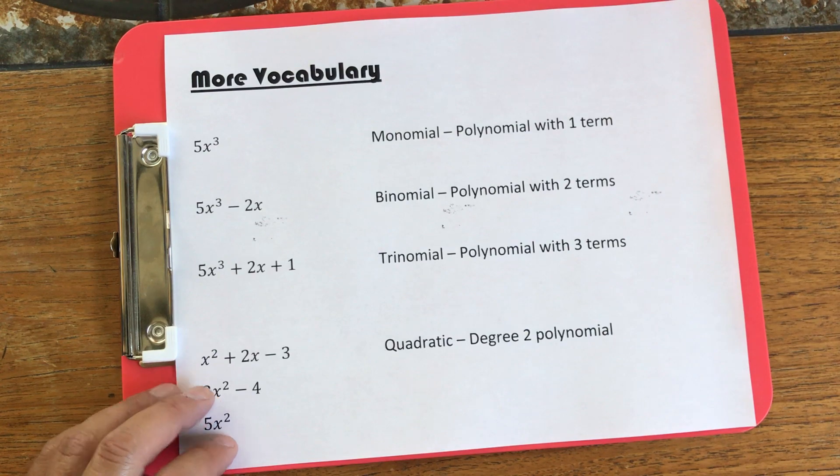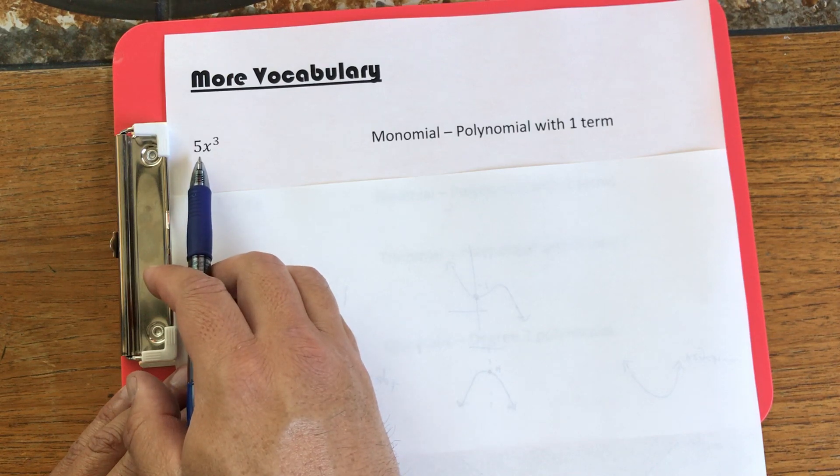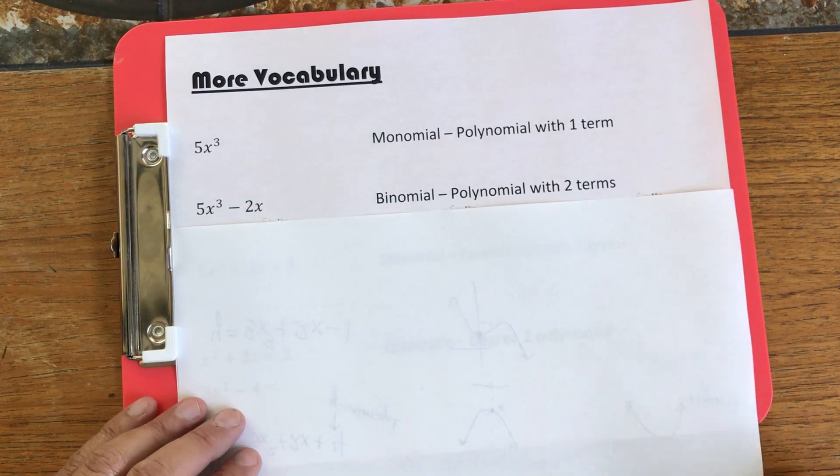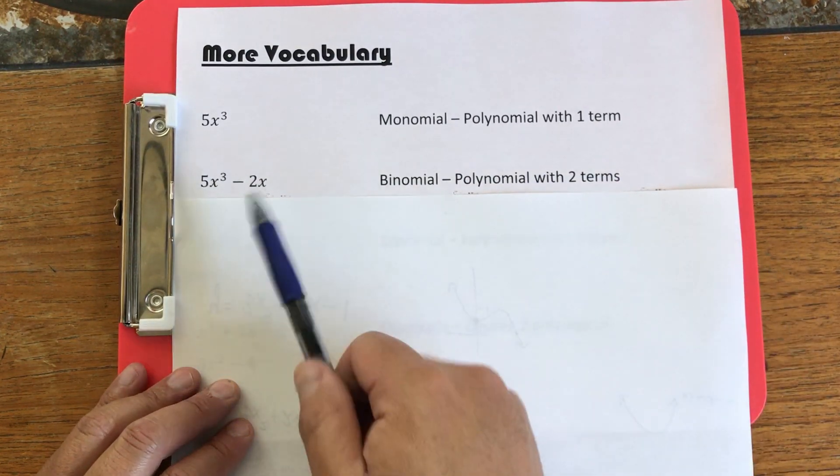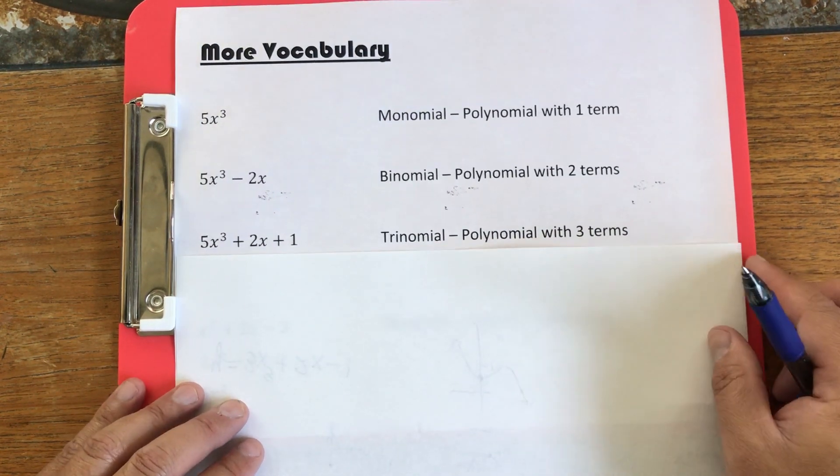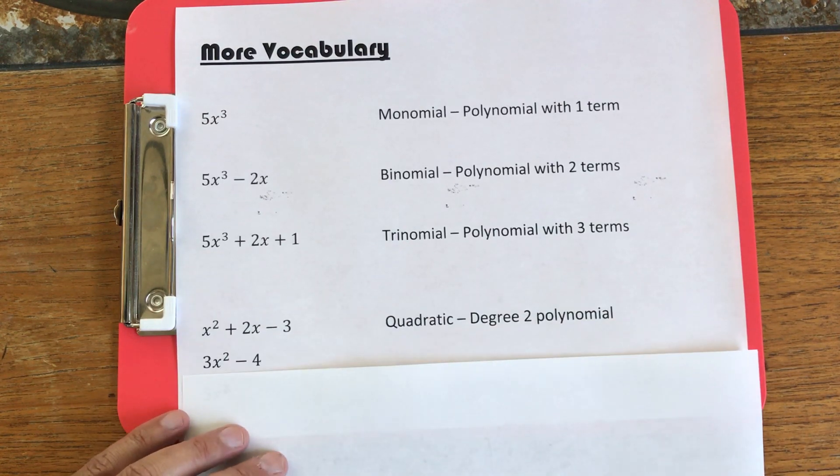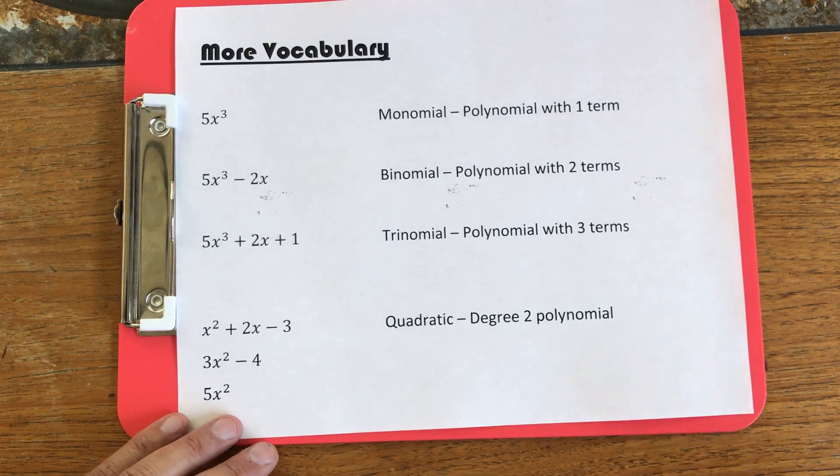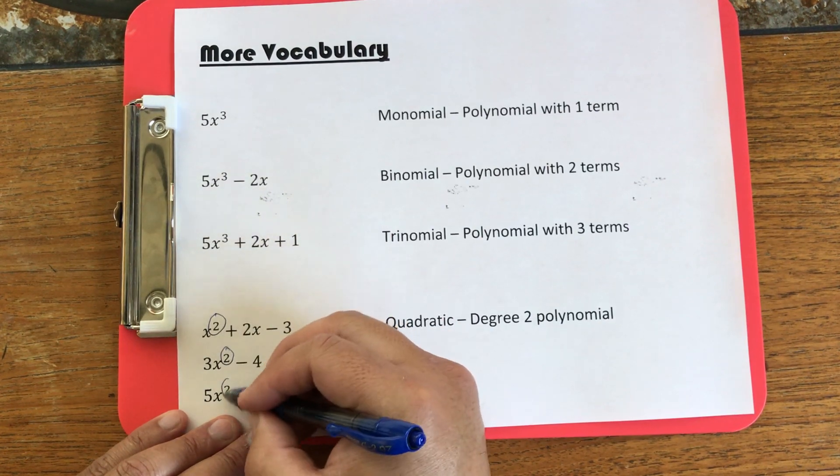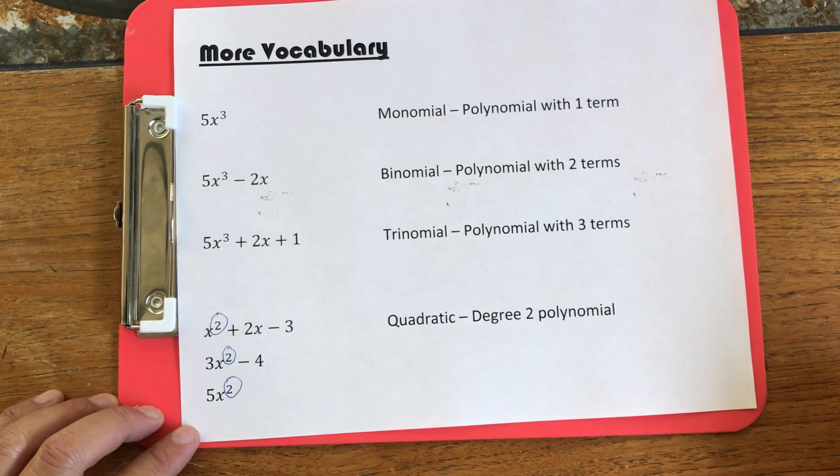Okay. Now, let's look at more vocabulary. If I have only one term, then I have a monomial. If I have a polynomial with two terms, then I have a binomial. If I have a polynomial with three terms, then I have a trinomial. Now, if I have a degree 2 polynomial, so now I'm not counting terms. I'm just looking at what is the largest degree. That is called a quadratic.